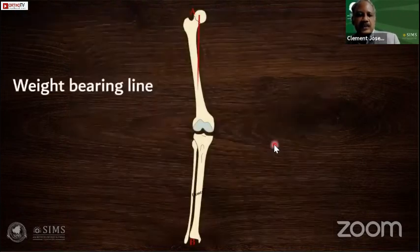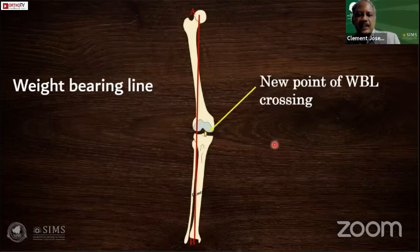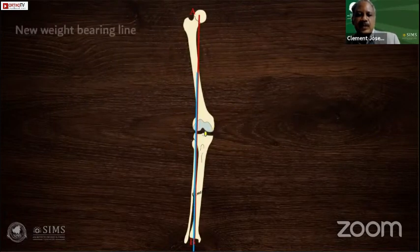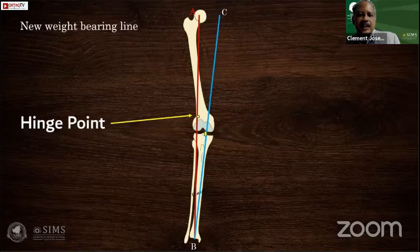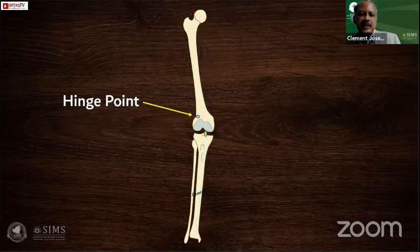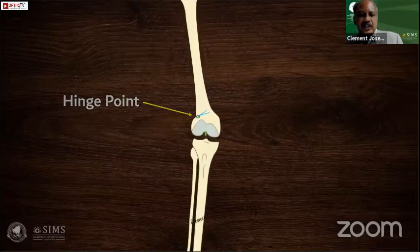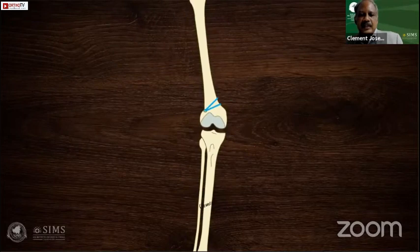In summary for the DFO planning: first draw the weight-bearing line, then identify the new point where you want to shift it. The line must remain the same length. From point C, draw another line to the femoral head — you now know the angle. The same angle is drawn on the medial femoral cortex, the closing-wedge is removed, and correction of the deformity is achieved.